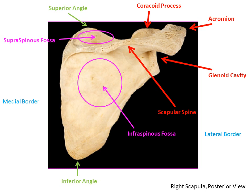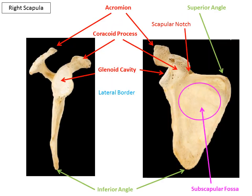More anterior to the acromion we have another projection called the coracoid process — again be careful with spelling, as we've learned conoid tubercle on the clavicle, and now on the scapula we have the coracoid process. Finally, we have the glenoid cavity, best seen on a lateral view, which is where the humerus fits into the scapula to help create our shoulder joint.